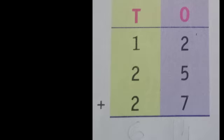2 plus 5 plus 7. 2 plus 5 is 7. 7 plus 7 is 14. Since 14 is a 2 digit number, we can write it here. But...